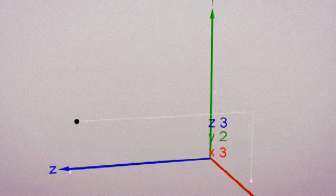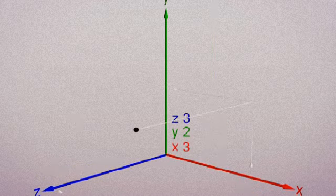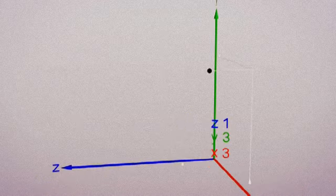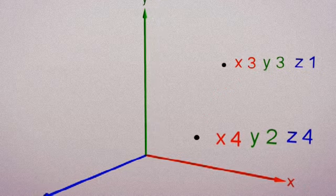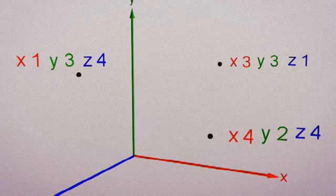This point has been placed at Z3, Y2, and X3. We can shift the point around by changing its values. Here we're adding more points. In 3D software, these points are also called vertices.